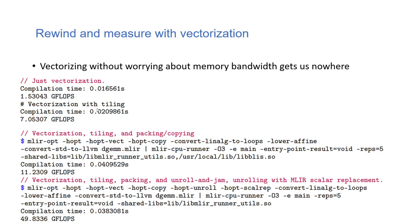Now gradually we apply additional optimizations. With tiling, performance jumps significantly from about 1 to 7 gigaflops. Adding vectorization, tiling, and packing together gets us to 11 gigaflops. Then adding unroll-and-jam plus scalar replacement — all the transforms we've seen so far — gets us to 49 gigaflops. We're getting closer to the 70 gigaflop target.